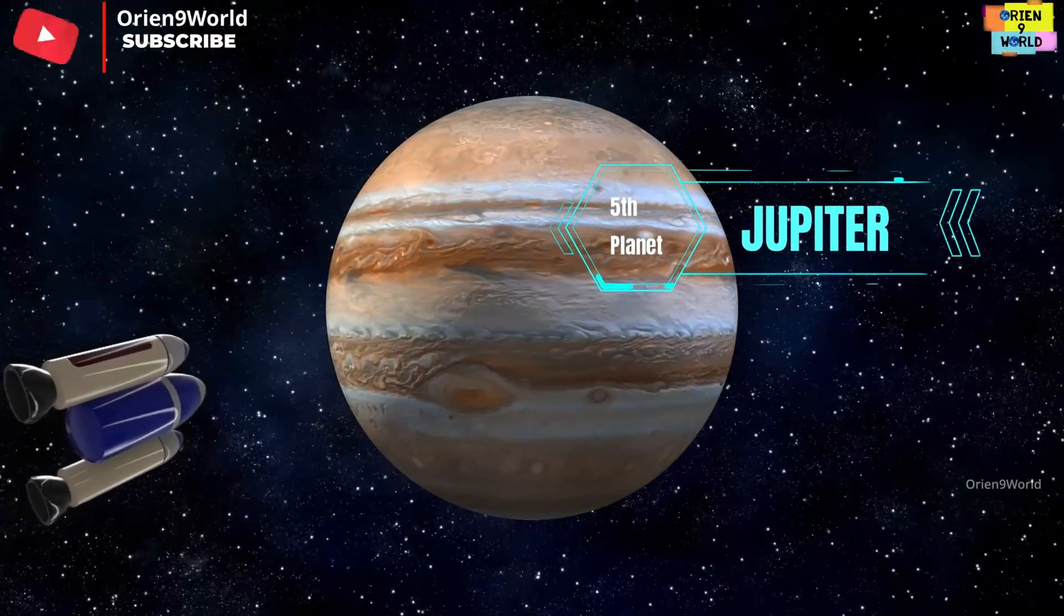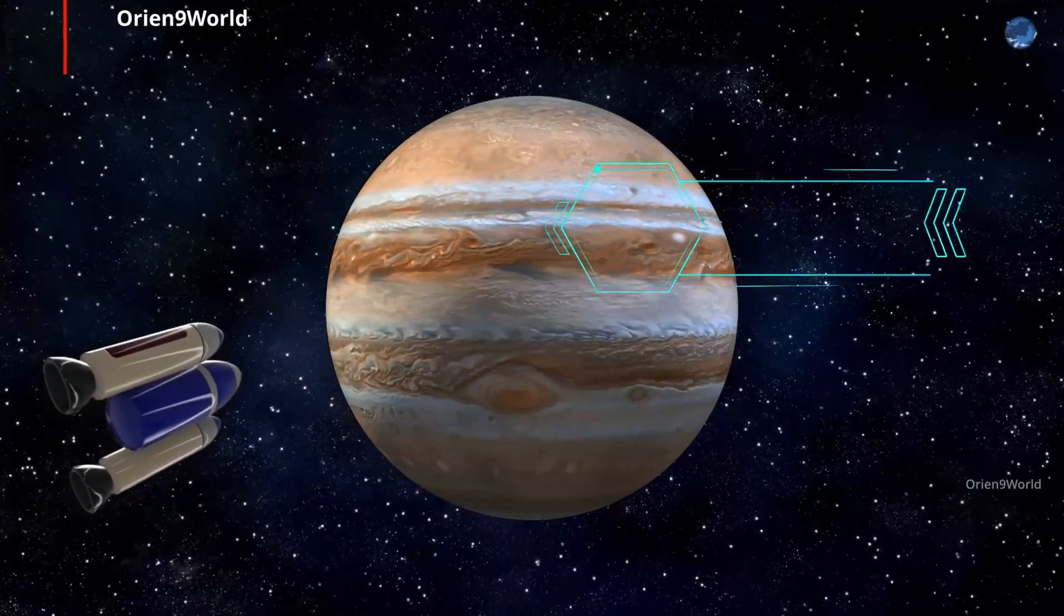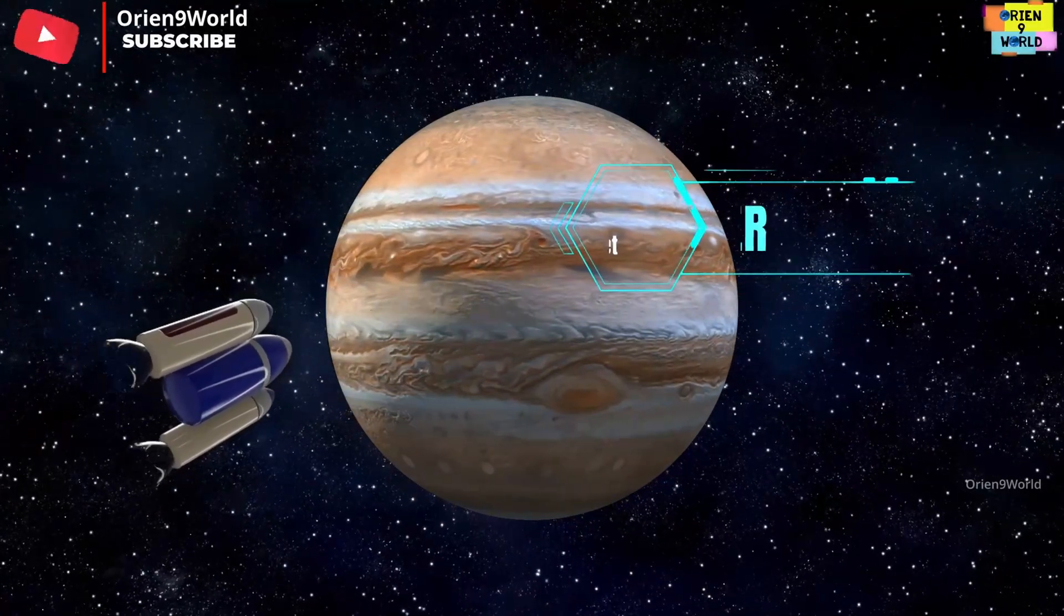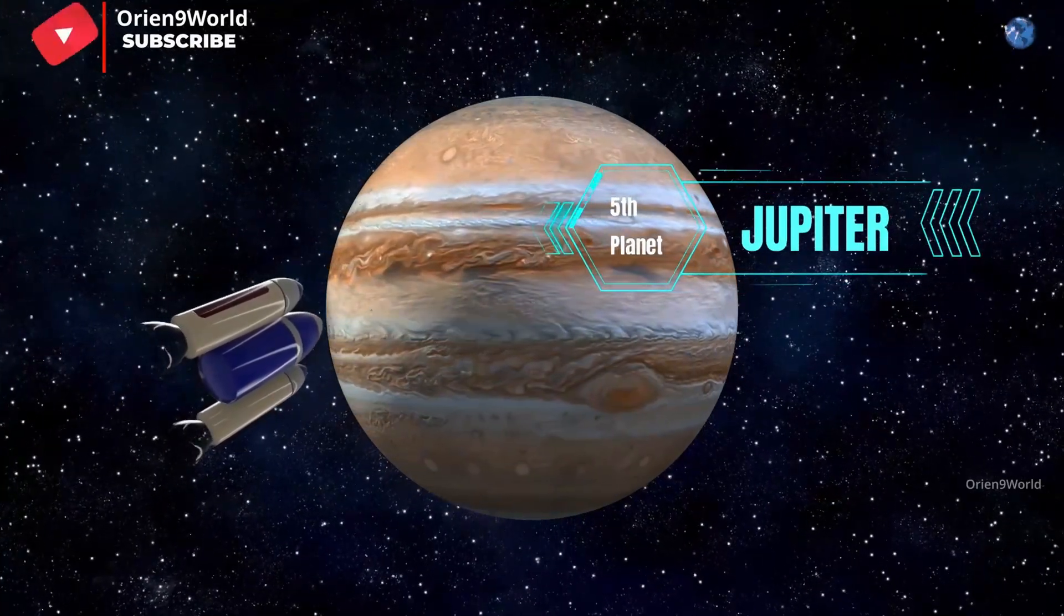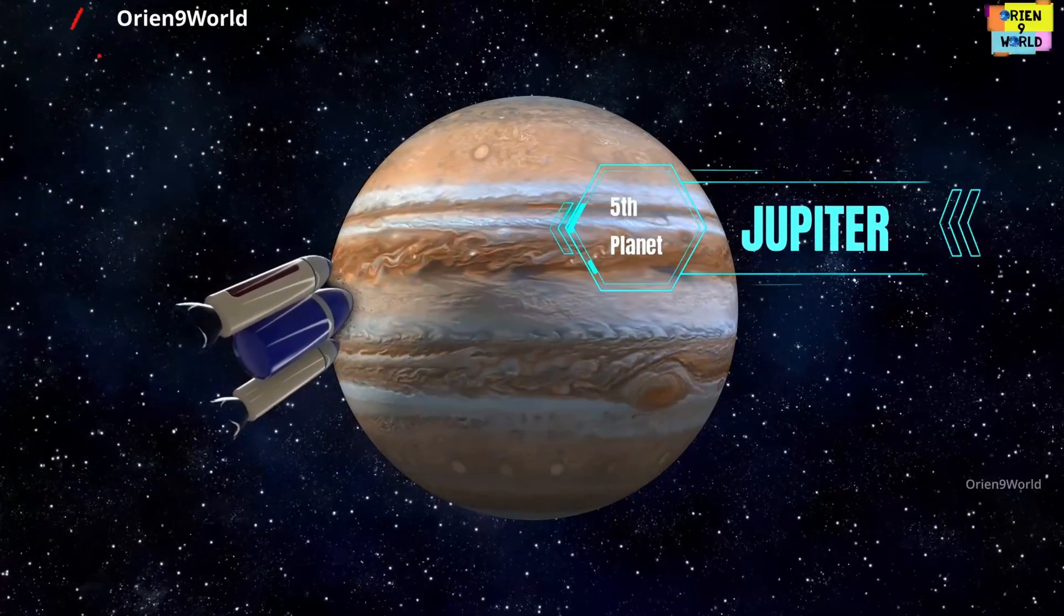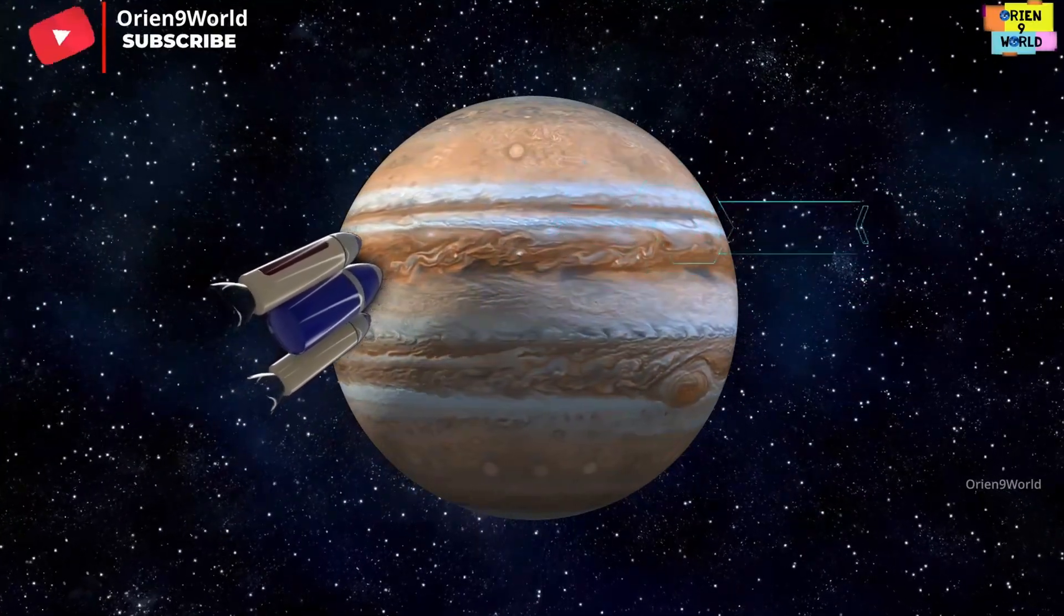My name is Jupiter, I am covered in clouds, I'm the fifth planet from the sun. My giant red spot is a raging storm, as for size I'm the biggest one.